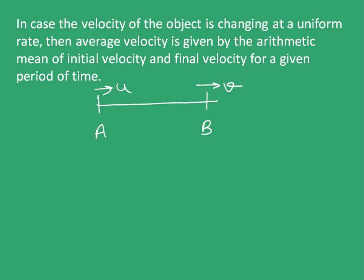So with this statement, what we say is average velocity is equal to initial velocity plus final velocity by 2. That is the arithmetic mean of initial velocity U and final velocity V.